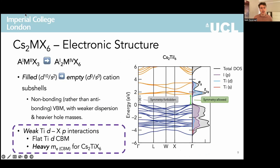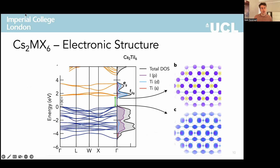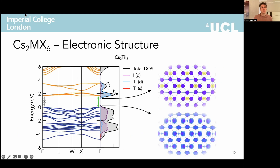For the titanium isomorphs, the same considerations apply for the valence band with heavy hole masses, but the conduction band is derived from strongly localised titanium D orbitals which have very weak interactions with the halide P states, giving rise to flat bands with heavy electron effective masses. Looking at the charge density of the CBM, this strong real space localisation is apparent. Analysis of the conduction band orbital character and symmetry reveals density of states peaks corresponding to the T2G and EG molecular orbital states expected from crystal field theory for an octahedral titanium complex, again highlighting the molecular nature of this family.